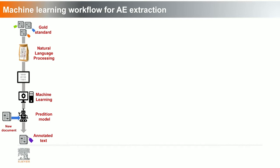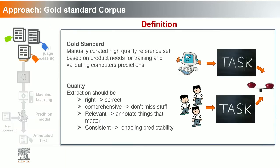Why is the gold standard important? The gold standard is a manually curated, high-quality reference set based on product need for training and validating computer predictions. The definition can vary based on the requirement or use case. It provides comparison with prediction models, ensures no relevant information is missed, and all predictions are consistently validated. In order to measure the variance between each annotator building the gold standard, we use that as an inter-annotator agreement score.